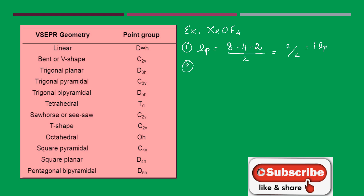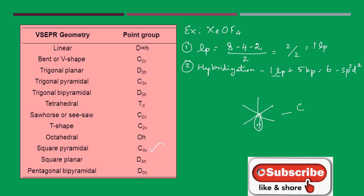Second step is hybridization. One lone pair plus 5 bond pairs gives 6 total — so the hybridization is SP3D2. SP3D2 means the base structure is octahedral. The base structure is octahedral, and there is one lone pair of electrons. Adding one lone pair to the octahedral structure gives a square pyramidal structure. Square pyramidal means the point group is C4V.